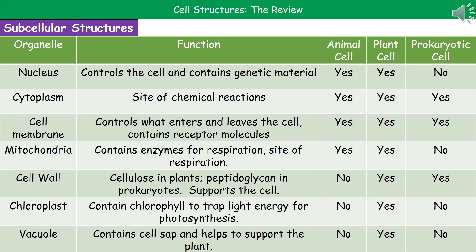The chloroplast contains the green pigment chlorophyll, whose purpose is to trap light energy from the sun in order to carry out photosynthesis — found only in plant cells. The vacuole contains a substance called cell sap and helps support the plant: as it takes in water, it pushes out against the cell wall and gives it that rigid structure. The vacuole is also only found in plant cells.